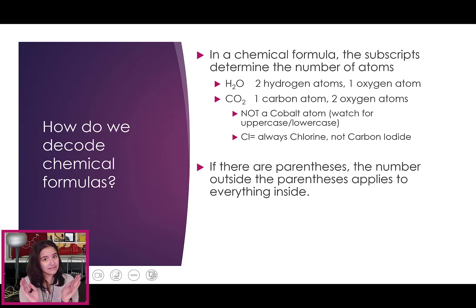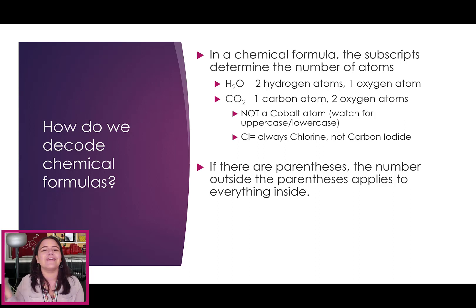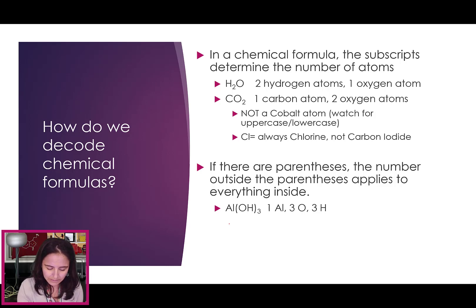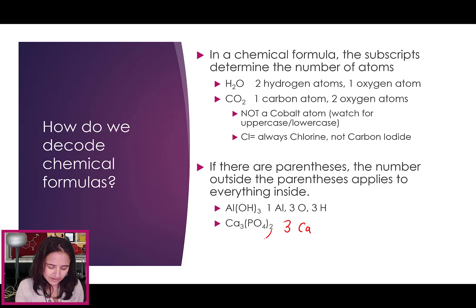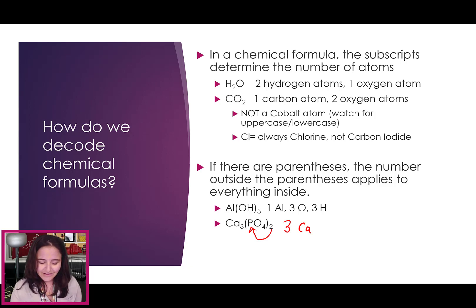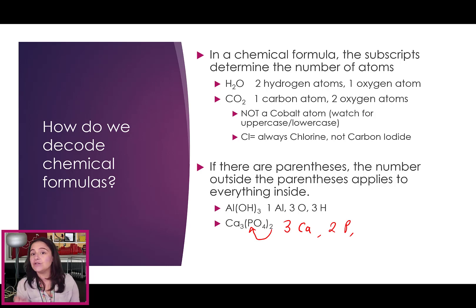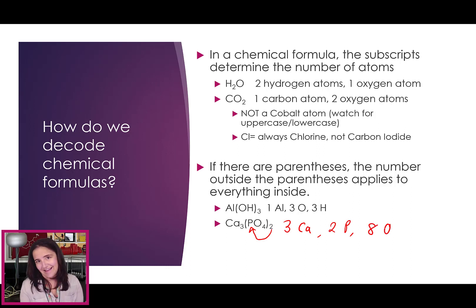Now, if there are parentheses in our chemical formula, just like math class, that number gets distributed in — it applies to everything inside the parentheses. So Al(OH)3, aluminum hydroxide, has one aluminum, and then three times that invisible one of oxygen and three hydrogen atoms. For Ca3(PO4)2, we got three calciums, and then the two gets distributed: two phosphoruses — it's phosphorus and oxygen, not polonium — and then four oxygens times two, giving a total of eight oxygens. You are multiplying, not adding.